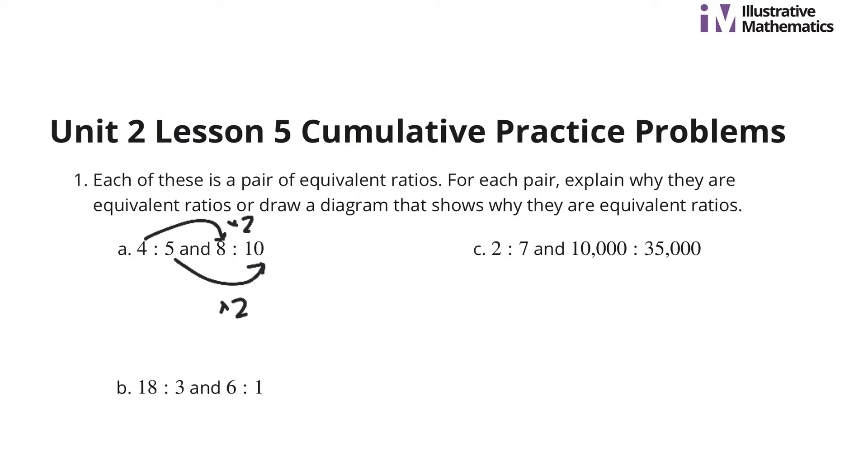Now, on the surface, 2 to 7 and 10,000 to 35,000 seems like a stretch. But, from 2 to 10,000, we're multiplying by 5,000. And, again, from 7 to 35,000 would be times 5,000. And so, we're multiplying by the same number, and so it's an equivalent ratio.